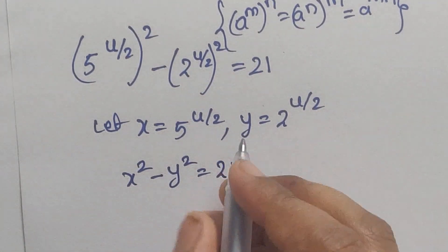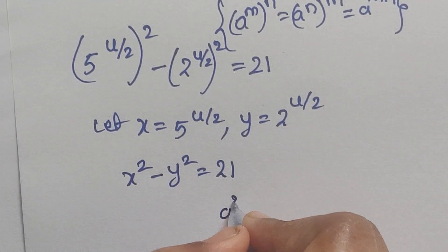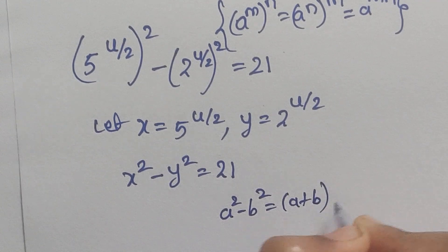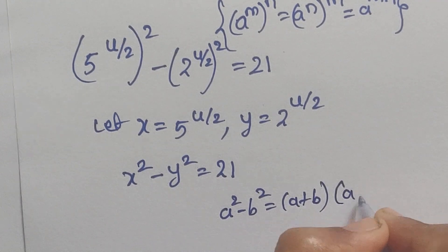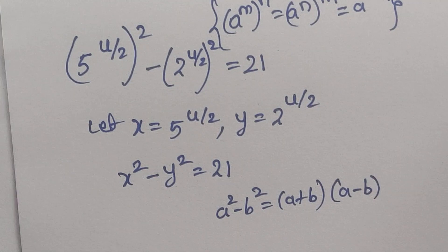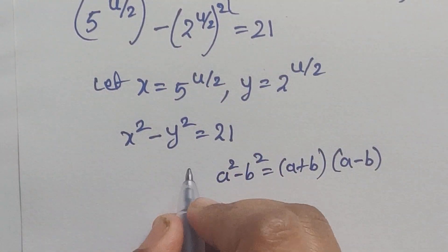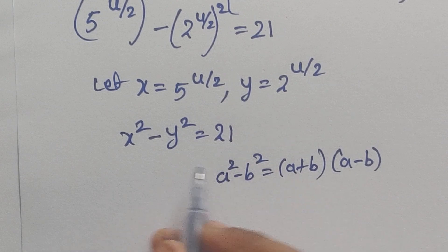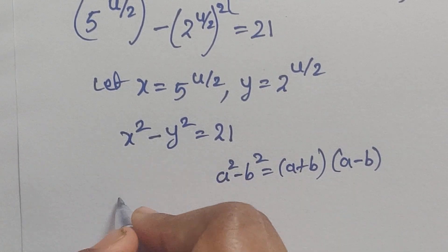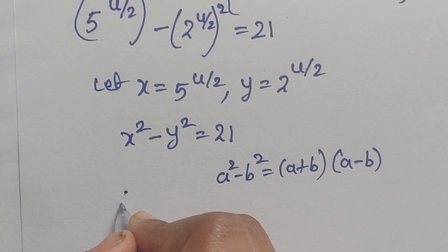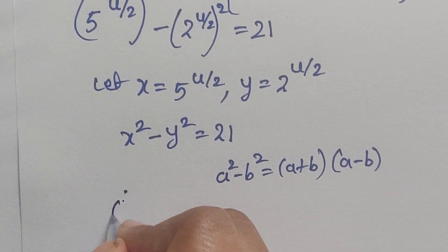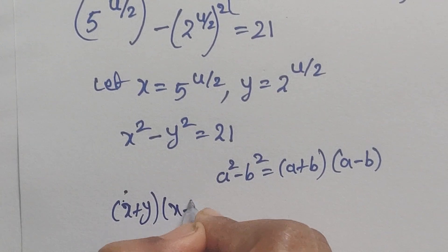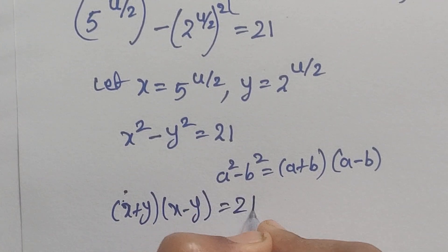We know the formula: x squared minus y squared equals (x plus y) times (x minus y). Applying this formula in place of x squared minus y squared, it becomes (x plus y) times (x minus y) equals 21.